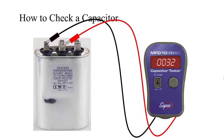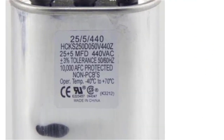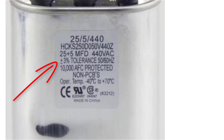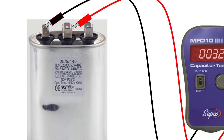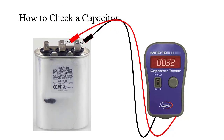Most new multimeters will check the capacitance of a capacitor, or you can use a capacitance tester. Let's take a closer look at this capacitor. It is a dual run — 25 microfarads to the compressor and 5 microfarads to the outdoor fan motor. Notice it has a tolerance of only 3% either way. In other words, it needs to measure 25 and 5 or it is bad.